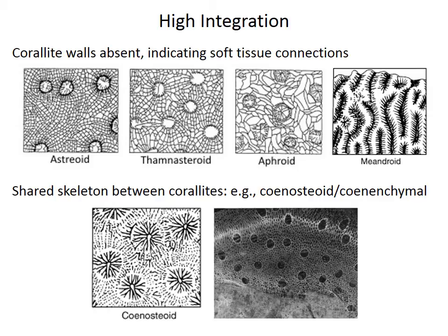Or the aphroid, where there are not even any septa at all in these rugose corals. Or the meandroid — the so-called brain corals — where the polyps are living in a row of connected polyps.